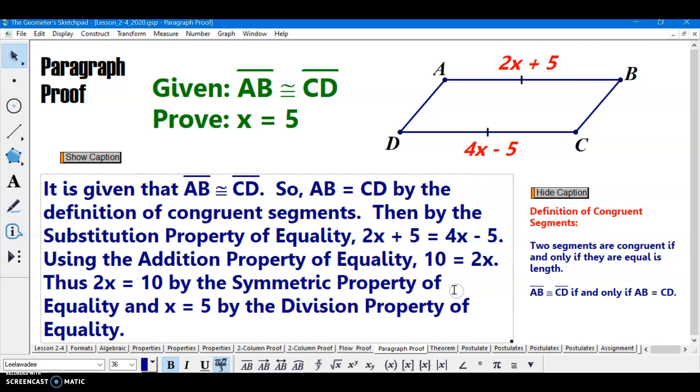That's like butterfly wings. They reflect onto each other. They could swap places and you'd never know it. So then divide each side by 2 and you have x equals 5 by the division property of equality. And there's our paragraph proof.